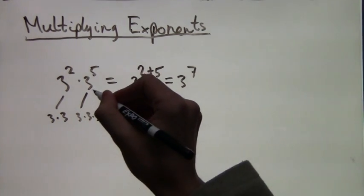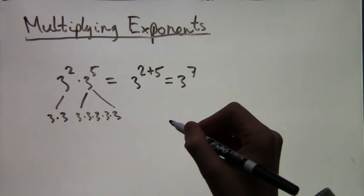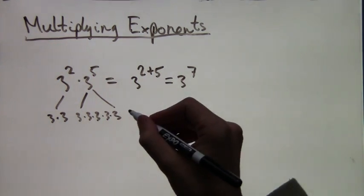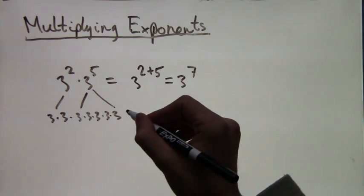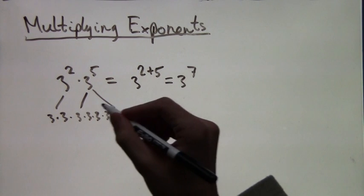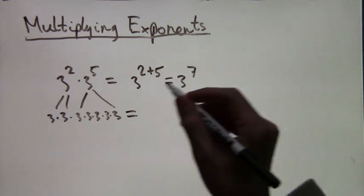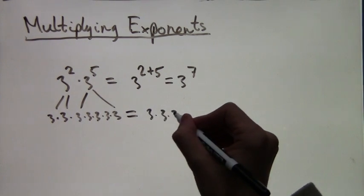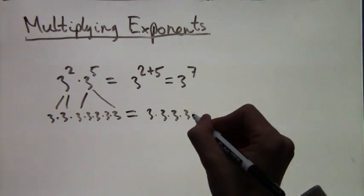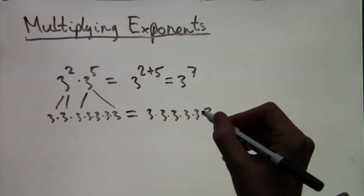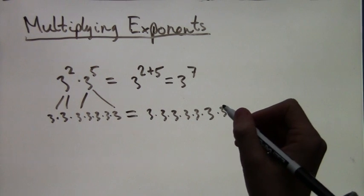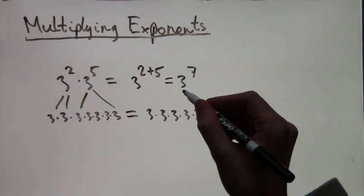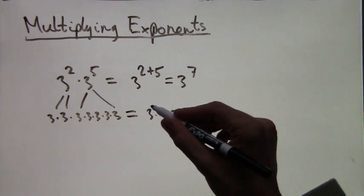Now let's take a quick look at why. So 3 squared is 3 times 3 — 2 threes — and 3 to the fifth is 3 times 3 times 3 times 3 times 3 — 5 threes. When we multiply these together, we have 2 from the squared and 5 from the fifth power, so of course there's 2 plus 5 — 7 threes. If you count them you'll get 7, so it's the same as 3 to the 7.